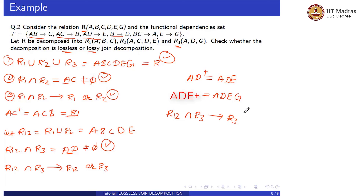The third condition is also satisfied. So we can say that decomposed relations R1, R2, R3 are lossless decomposition.